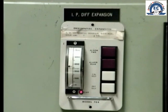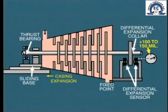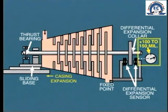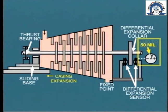Differential expansion is measured and indicated at the operator's control panel or console. Typically during startup, we will observe a positive differential expansion increasing continuously up to about 100 or 150 mil. We may have to restrict loading in order to keep from exceeding this level. Eventually, as the casing expands further and further, the differential will decrease and probably settle down to say, plus 50 mil.